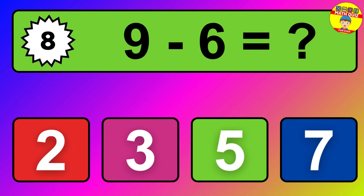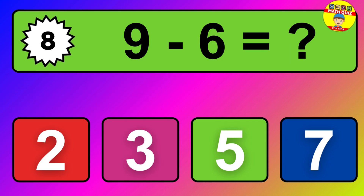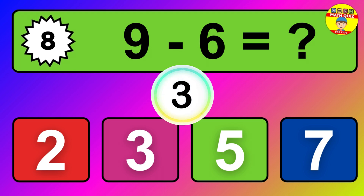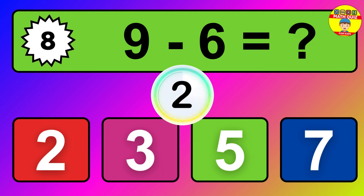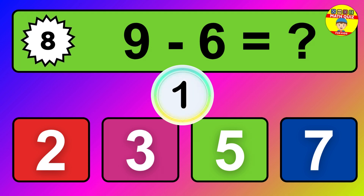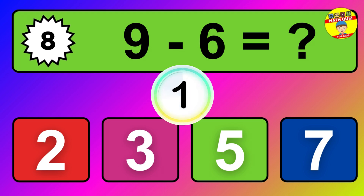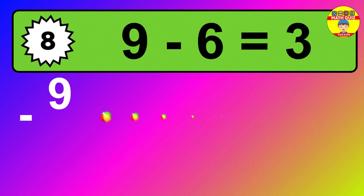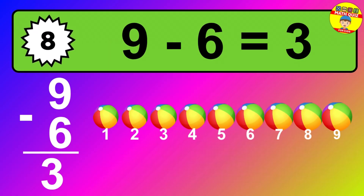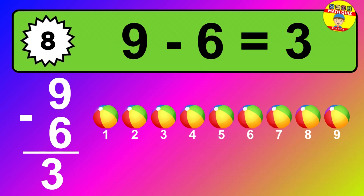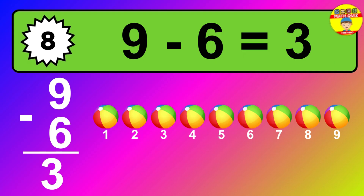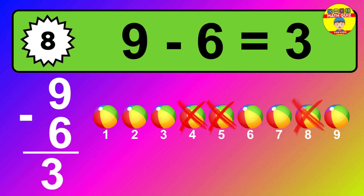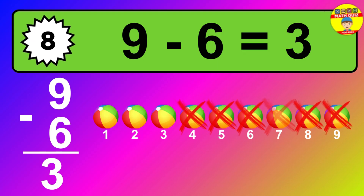Question eight: nine minus six equals what? The answer is nine minus six is three. Let's count it: one, two, three.